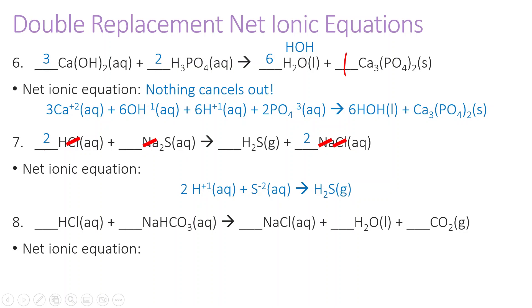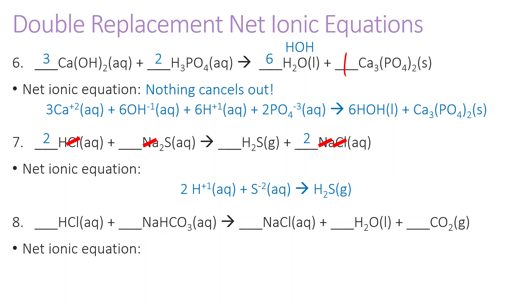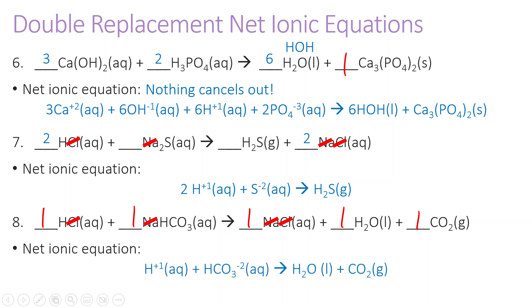In the next equation, the only things that cancel out are Na and Cl — both start as aqueous and end as aqueous. This reaction is already balanced: one sodium, one sodium; one chlorine, one chlorine; two hydrogens total; three oxygens total; one carbon and one carbon. So for the net ionic equation, I leave out Na and Cl because those don't change. I do have a reaction with H+ and hydrogen carbonate forming water and carbon dioxide.